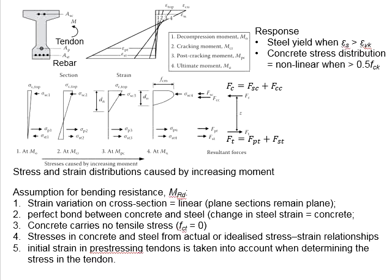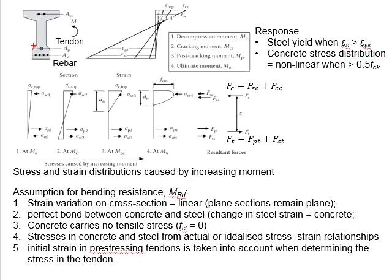This slide shows the typical response of a pre-stressed concrete beam subjected to an incremental flexure load until failure. This is the cross-section of the beam. There is a pre-stressing tendon and these are the reinforcement bars in the section. The beam is subjected to an external load which subsequently leads to an incremental moment until the failure of the section.